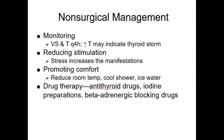Propylthiouracil is also used, frequently called PTU. It's used less often because of its toxic effects on the liver. PTU can be remembered as "put thyroid under" — a drug that turns the thyroid down. Methimazole is the popular drug used to treat hyperthyroidism. These drugs block thyroid hormone production by preventing iodide binding in the thyroid gland. Iodine preparations may be used for short-term therapy before surgery; they decrease blood flow to the thyroid gland, reducing the production and release of thyroid hormone.